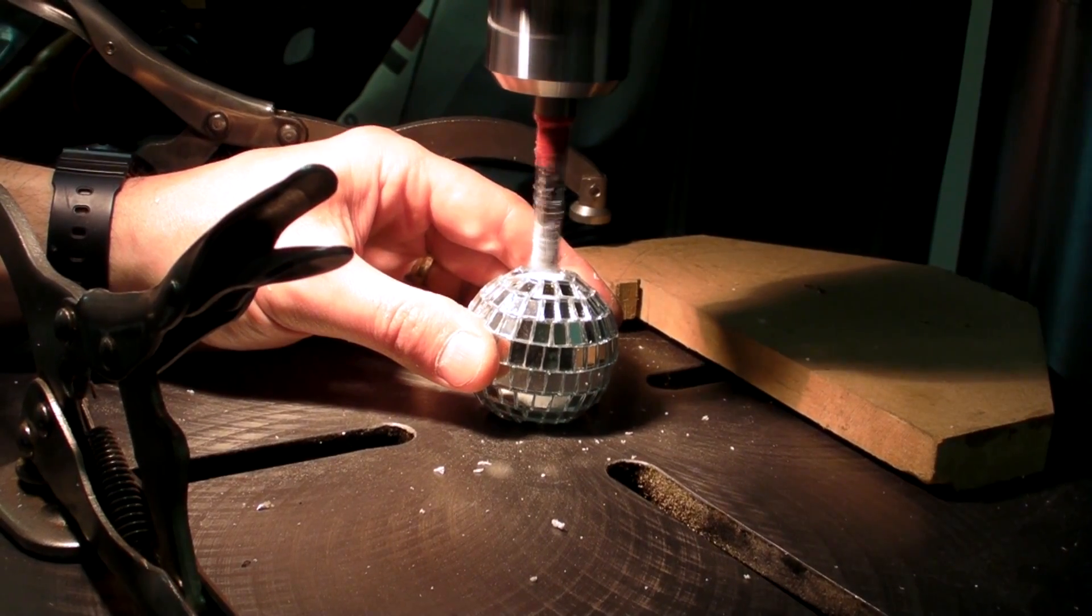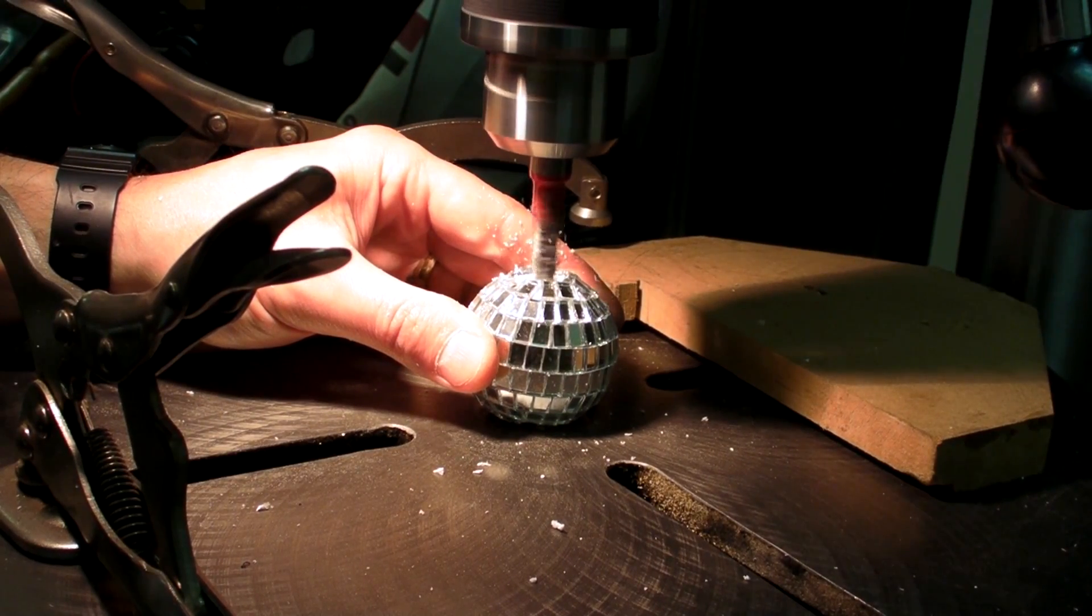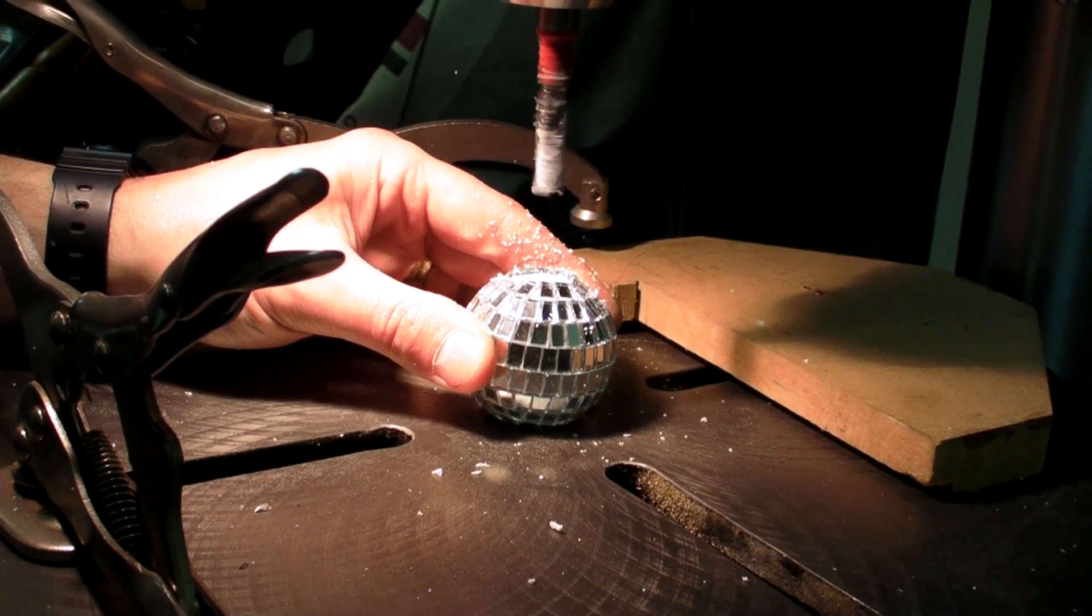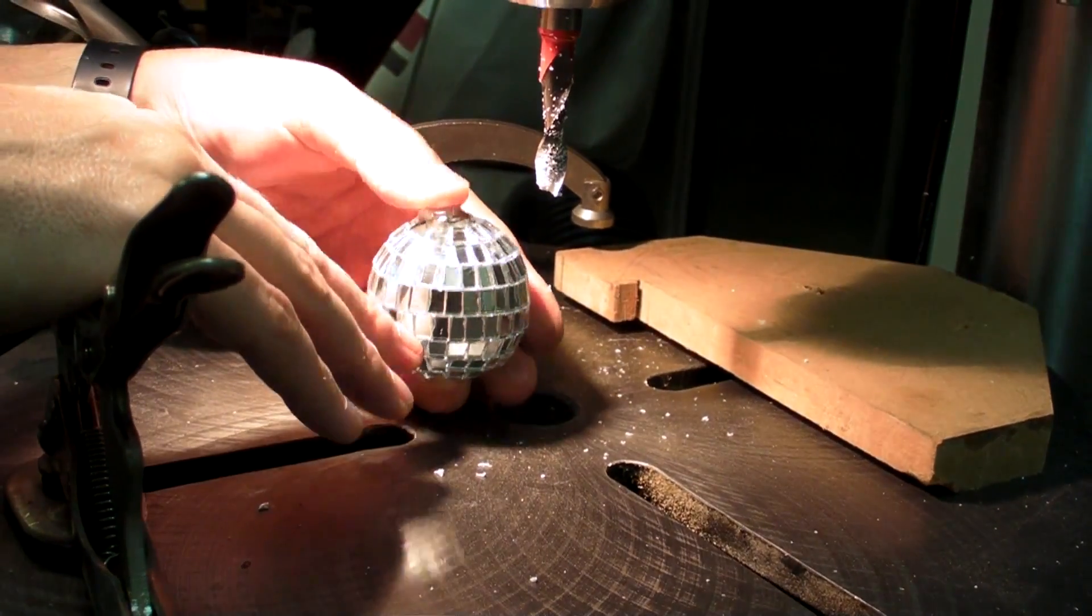For the mirror ball, I just used a Christmas ornament, which is a styrofoam ball with mirror tiles glued onto it. I drilled out the center and placed three neodymium rare earth magnets inside.